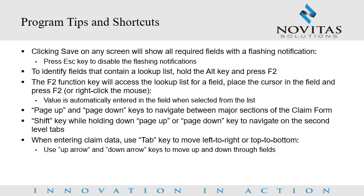To identify fields that contain a lookup list, hold the Alt key and press F2. To view the lookup list, press the F2 function key when the cursor is in the field, or right-click the mouse over the field. When an item from the list is selected, its value is automatically entered in the field. Use the Page Up and Page Down keys to navigate between major sections of the claim form. The Shift key can be pressed while holding Page Up or Page Down to navigate second-level tabs. When entering claim data, use the Tab key to move left to right or top to bottom, and use the Up and Down arrow keys to move through the fields.